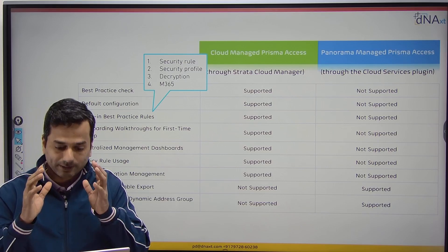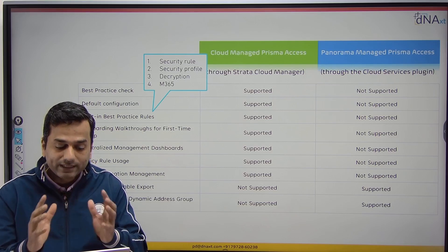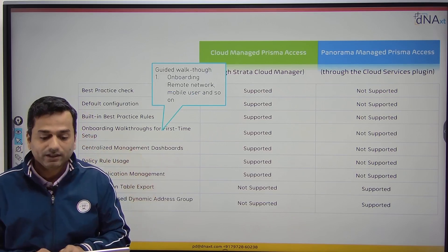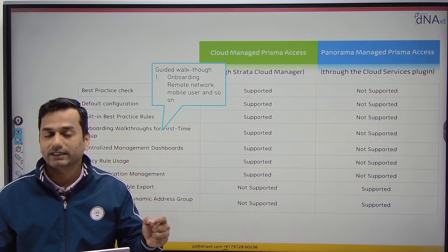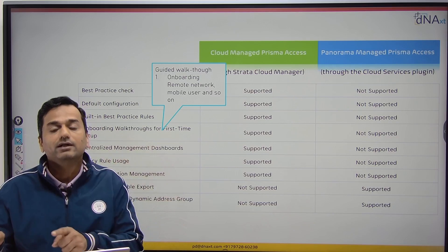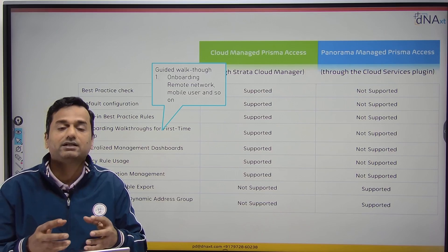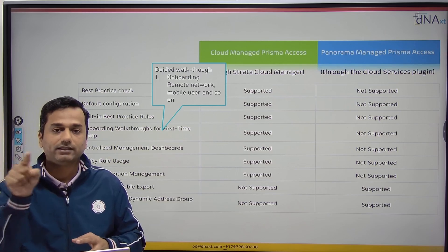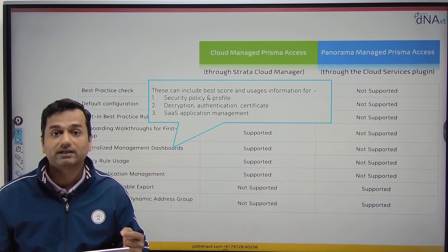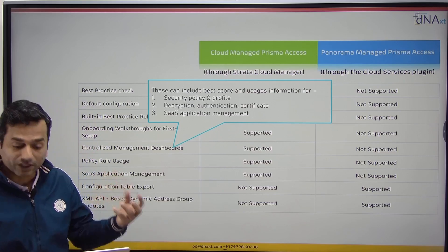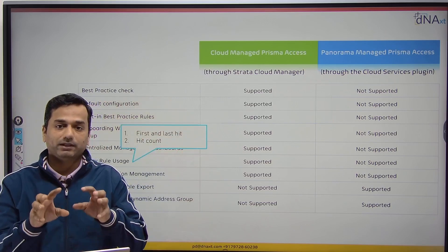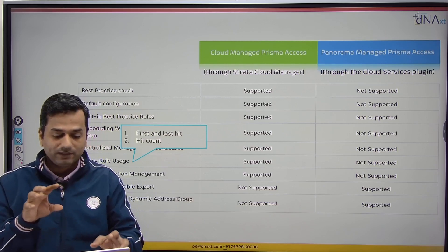Whenever you configure your security policies through Strata Cloud Manager, you will get built-in best practices rules. Next, onboarding — you get a wizard. If you want to onboard your remote network, such as GlobalProtect mobile users or service connections, you will get a wizard to guide you through onboarding your services step by step. Centralized management dashboard provides security policy, security profile, decryption, authentication, certificate, and SaaS application management. Also, whenever you configure any policy in Strata Cloud Manager, you will get a first hit, last hit, and hit count — which you will not get in Panorama.